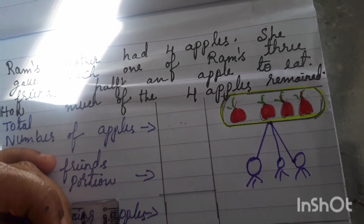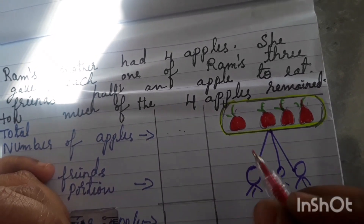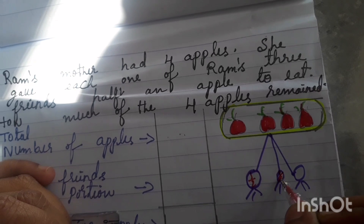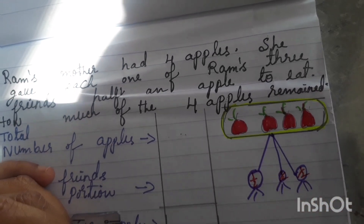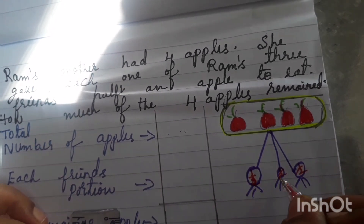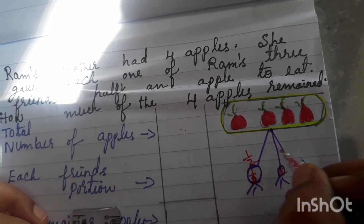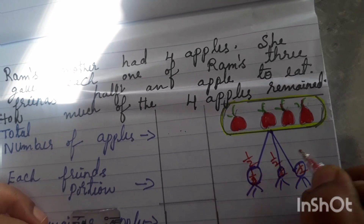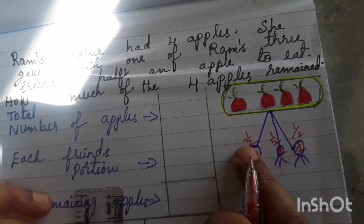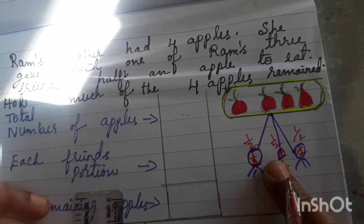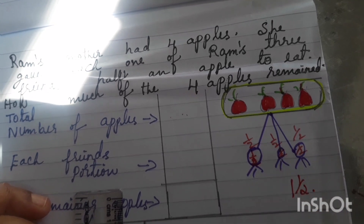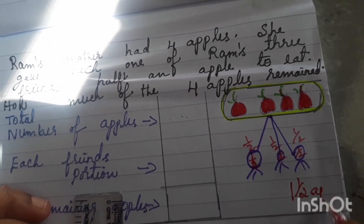She gave half an apple to each of the 3 friends. So half plus half plus half: half plus half is 1, and 1 plus half is 1 and a half. So she gave 1 and a half apples total to the 3 friends.